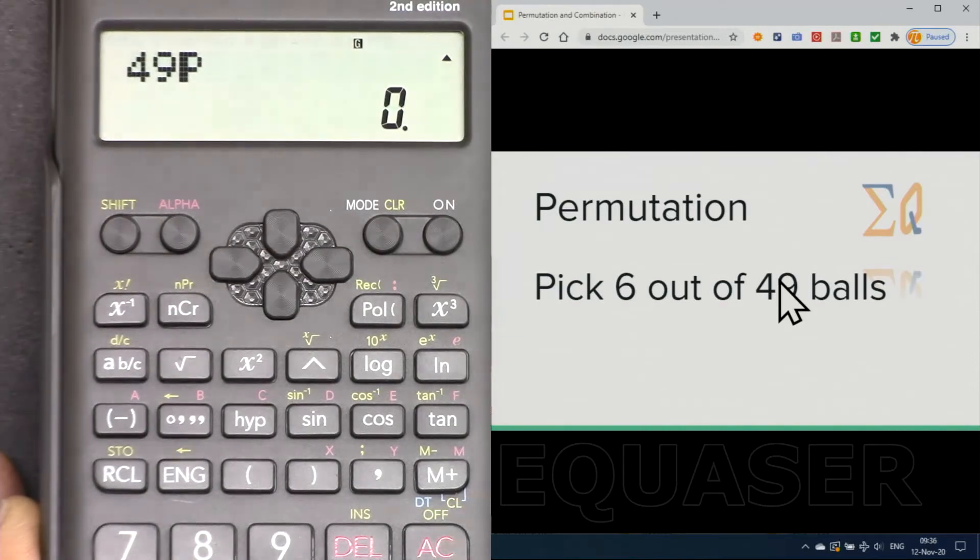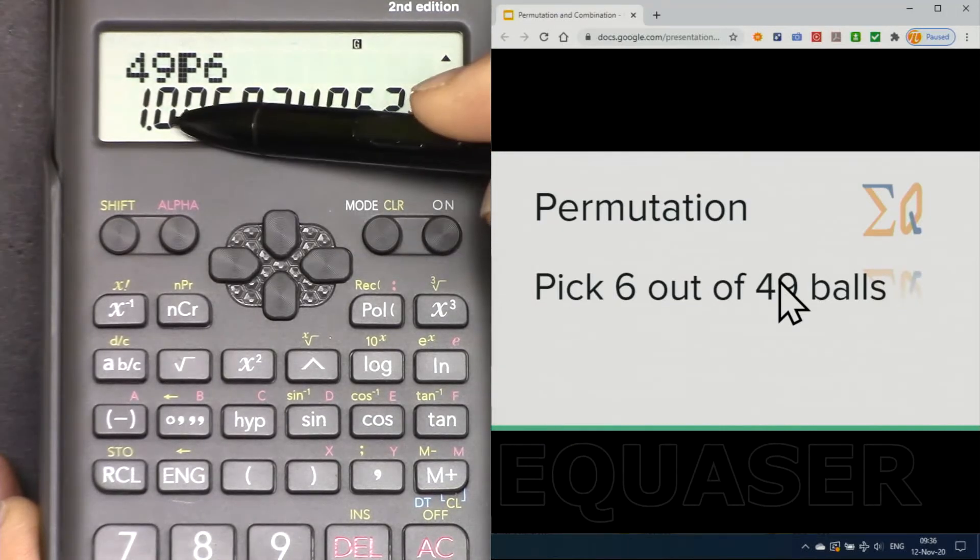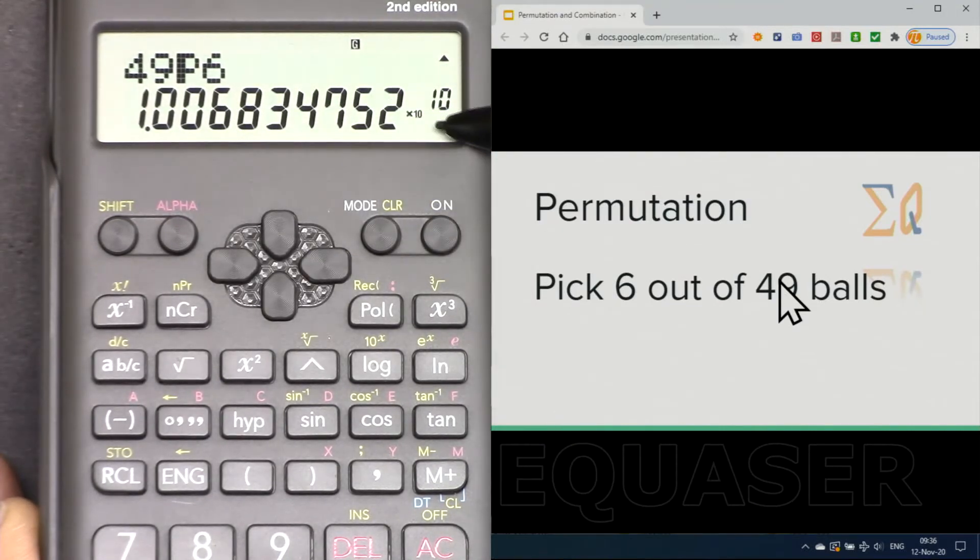Now enter the number that you are picking out of that 49, so in this case 6. And when I press enter, it is 1.006 and all this number times 10 to the power 10. So this is a very large number because we allowed repetition.